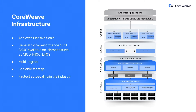We allow for massive scale — up to thousands of pods and thousands of GPUs to run the most intense machine learning workloads. We have several high-performance GPU SKUs such as the A100, and we have a lot of H100s coming in along with the new L40s that support FP8. We're multi-region across the US and expanding to Europe, and our storage is scalable to petabytes or further.